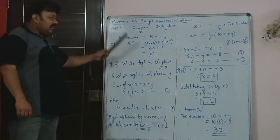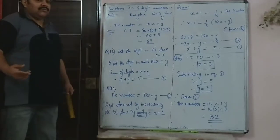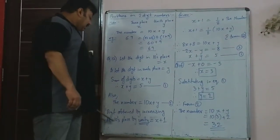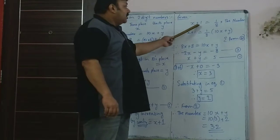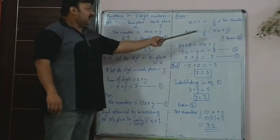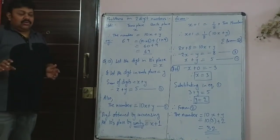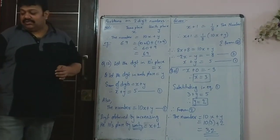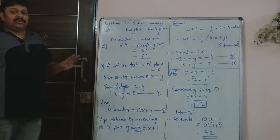Let's understand the method: take tens place as x and units place as y, so the original number is 10x plus y. The condition — sum of digits equals 5 — gives x plus y equals 5. The digit obtained by increasing the tens place by unity (x plus 1) is one-eighth of 10x plus y. These two-digit number sums for class and homework are all important — you can expect either a two-digit number sum, an age sum, or a work problem in your exam.